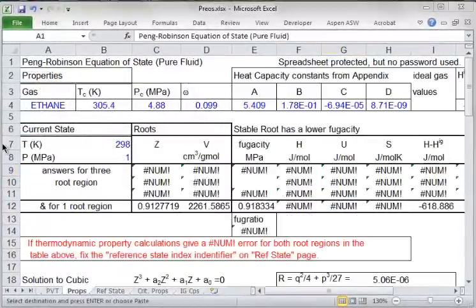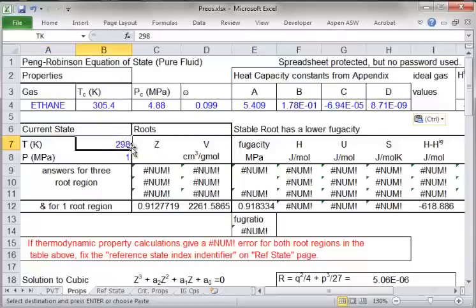Now, I've changed the fluid on the props page to ethane. I've entered the critical properties and the heat capacity constants by pasting the values. I want to use a temperature of 350 Kelvin and 0.5 MPa.